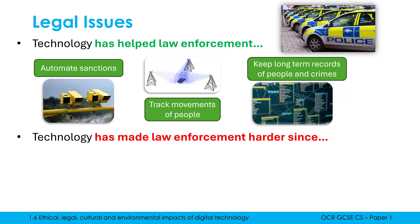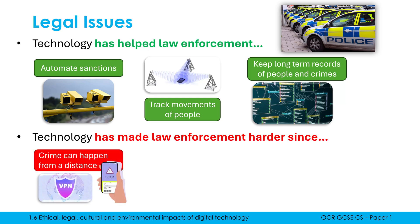Technology has also made certain things harder for agencies like the police, because crime is able to happen from a long distance and people can hide where they are located through things like VPNs, which mask where someone is actually located. If they're doing it from a different country, the UK police might not have jurisdiction over those people — they can't just go into another country and arrest somebody. A lot of scams originate outside of the UK because the scammers know the UK police can't do much about it.